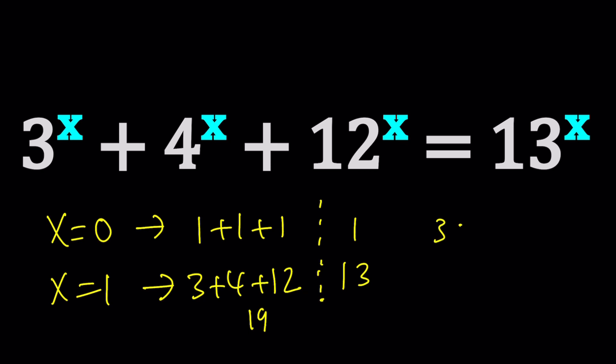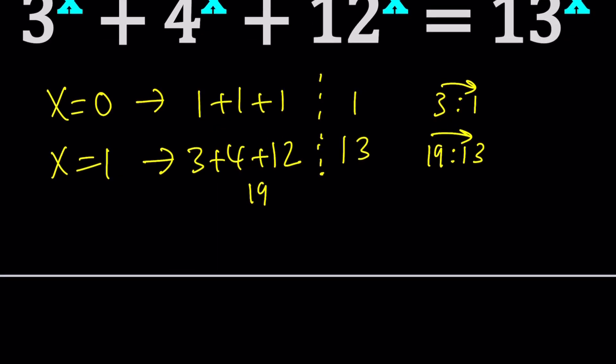Looking at the ratio: 19 to 13 is closer to 1 than the 3 to 1 ratio we had at x equals 0. So maybe x equals 2 is going to work. The other problem we had was similar — we had three numbers on the left and a single number on the right-hand side.